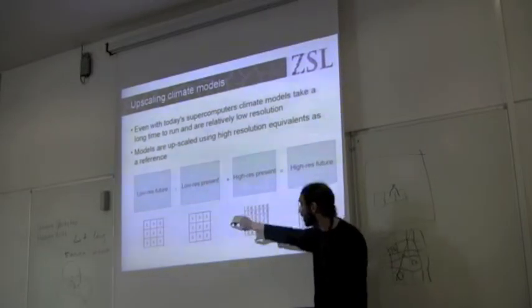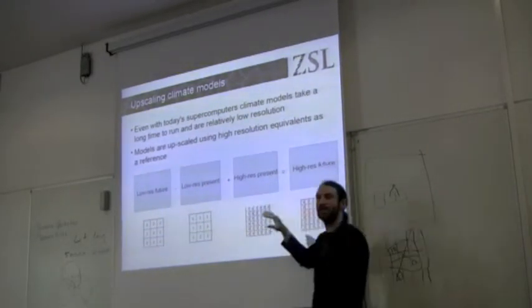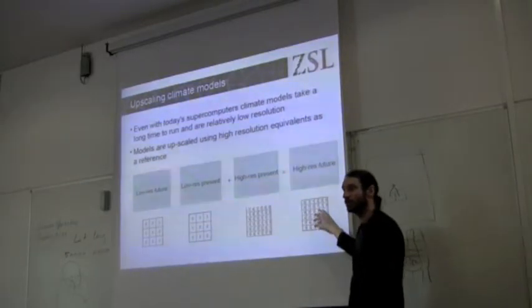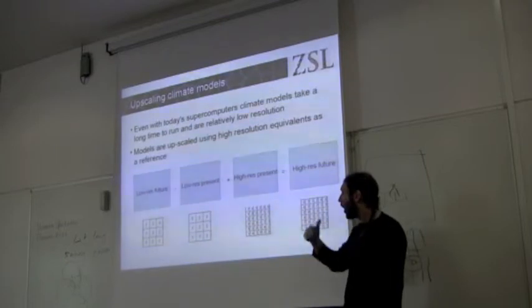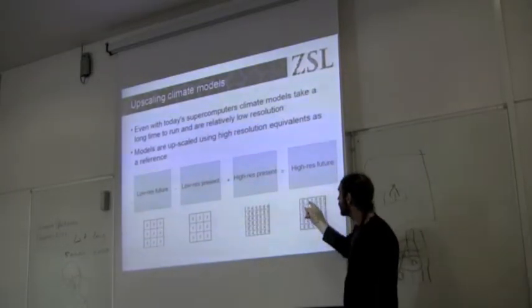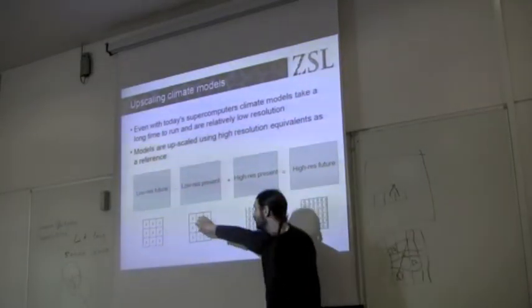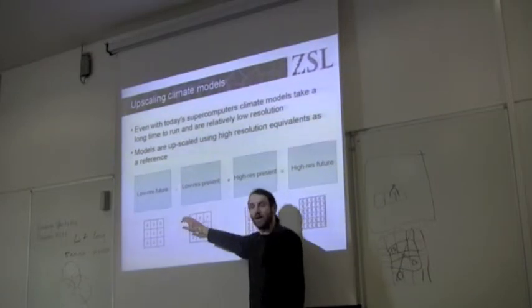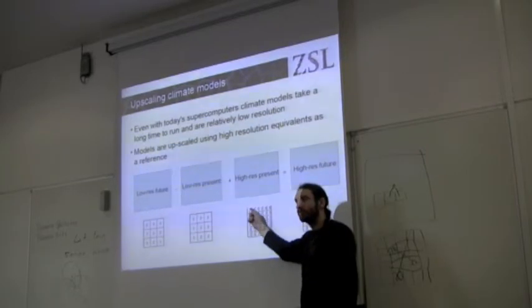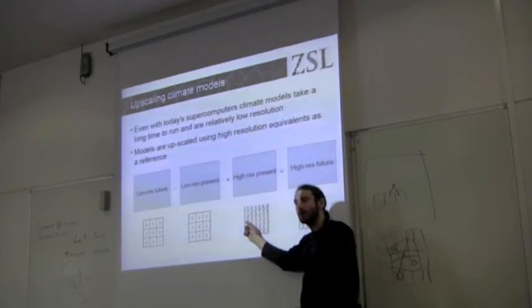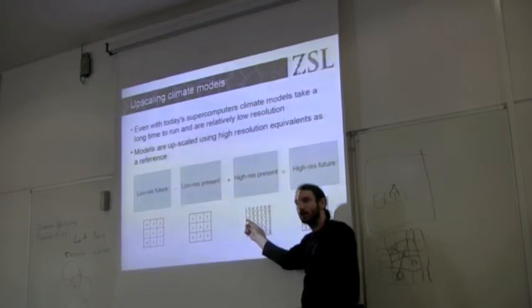So, you start with a low-resolution grid and you end with a high-resolution grid. So, the variation within these four pixels is directly relevant to the present day variation you see.